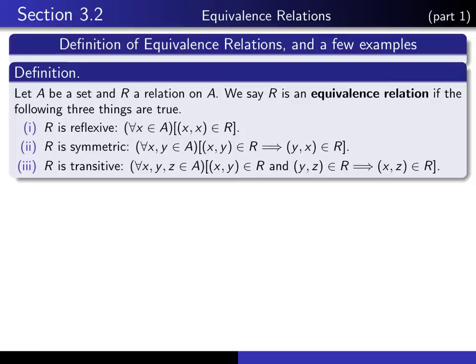An equivalence relation is a relation that has three special properties. If we let R be a relation on a set A, then it's referred to as an equivalence relation if it has these three properties: R is reflexive, symmetric, and transitive. The formal working definitions of those terms are given here.